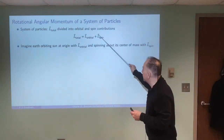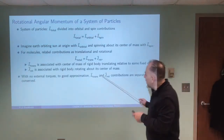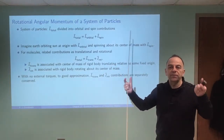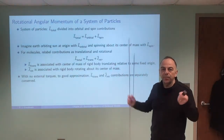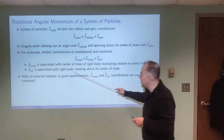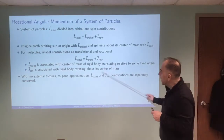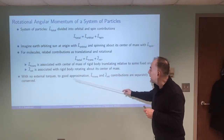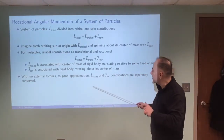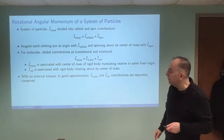We're going to take the same approach when describing a molecule. We write those two contributions as the angular momentum associated with the molecule translating relative to some origin, and then there will be an angular momentum associated with the molecule rotating about its center of mass. This L translational is the angular momentum of the center of mass relative to some fixed origin, and J rotation is the angular momentum associated with the body rotating about its center of mass. With no external torques applied, to a good approximation, the two contributions will be separately conserved because there will be conservation of angular momentum.